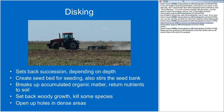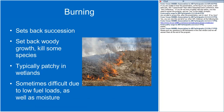Prescribed burning also sets back succession and is helpful in setting back woody growth — it may even kill some species of shrubs. However, it can be somewhat patchy in how it's applied to the habitat. Wetlands can sometimes be too wet and vegetation too moist for it to catch fire. You also have to worry about fuel loads and weather conditions, primarily humidity and moisture on the ground, for an effective burn.